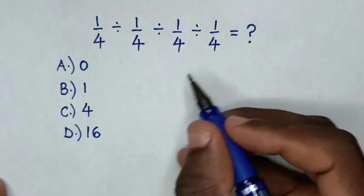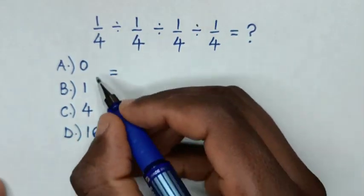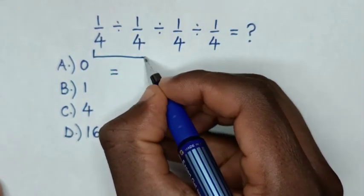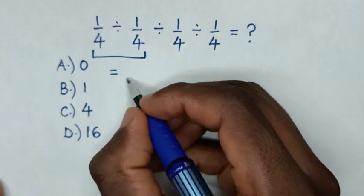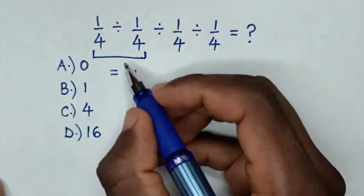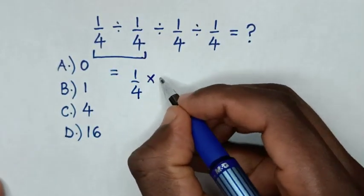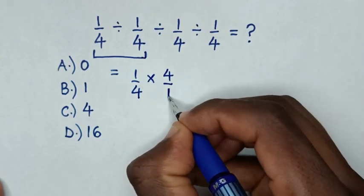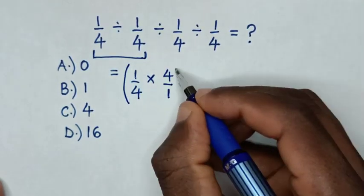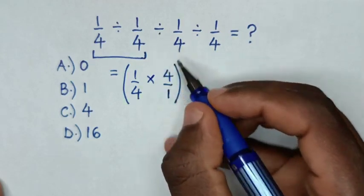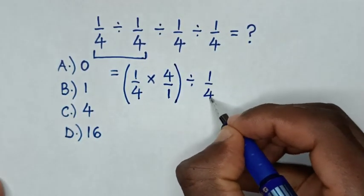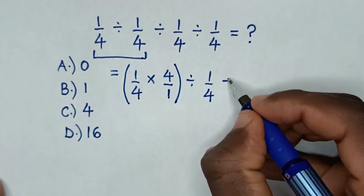So, this expression will be equal to, first we start to deal with this first operation. 1 over 4 divided by 1 over 4 is same as times 4 over 1, then bracket, divided by 1 over 4, then divided by 1 over 4.